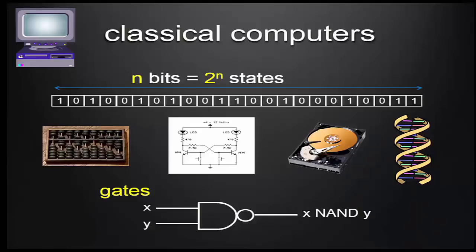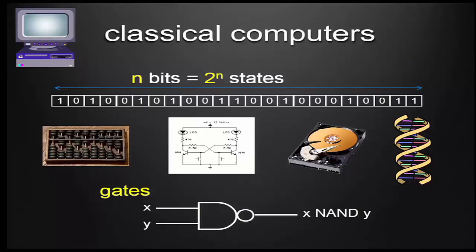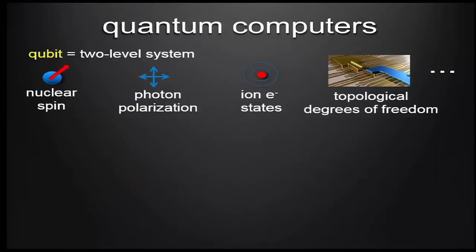Quantum, by contrast with classical — a classical bit can be in two states, and when you put together n of them, there can be 2^n states. A crucial idea of computing is to abstract away from the physical realization of that bit — it could be RAM, a hard drive, a bead on an abacus, or DNA. The principles of computing are independent of that. And until quantum computing, all these different forms of computing were equivalent to each other.